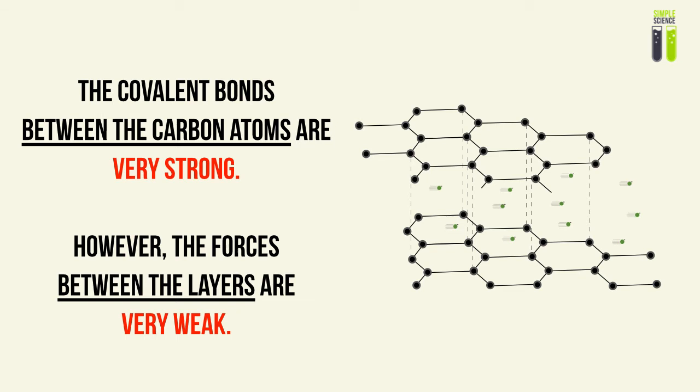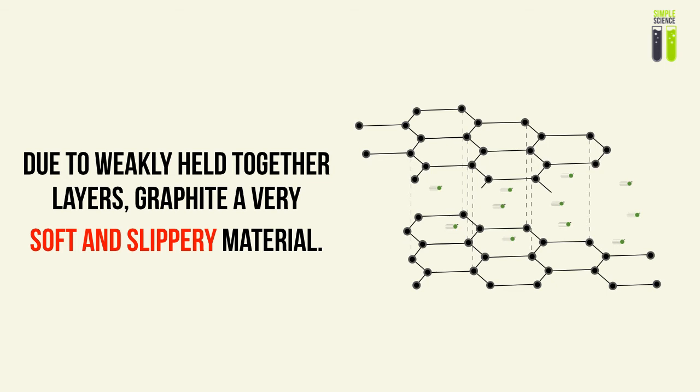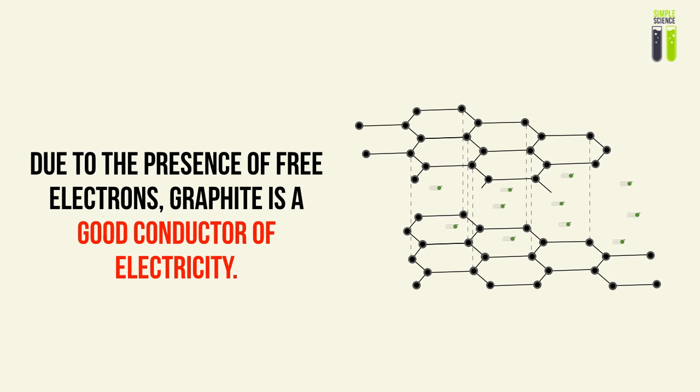There are very strong covalent bonds between the carbon atoms within each layer; however, the forces between the layers are very weak — van der Waals forces, which are induced and not permanent. Due to these very weak interlayer forces, graphite is a very soft and slippery material, as the layers can easily slide past one another. The presence of electrons between the layers is also important for certain physical properties.